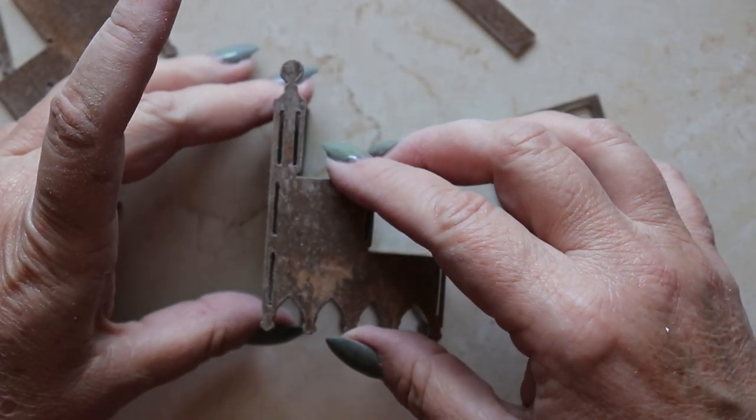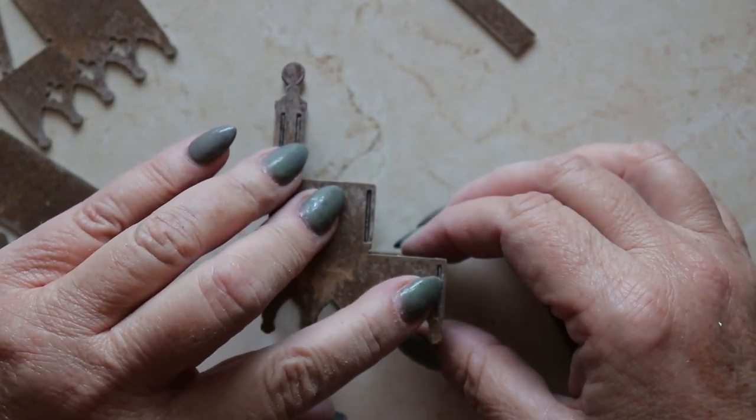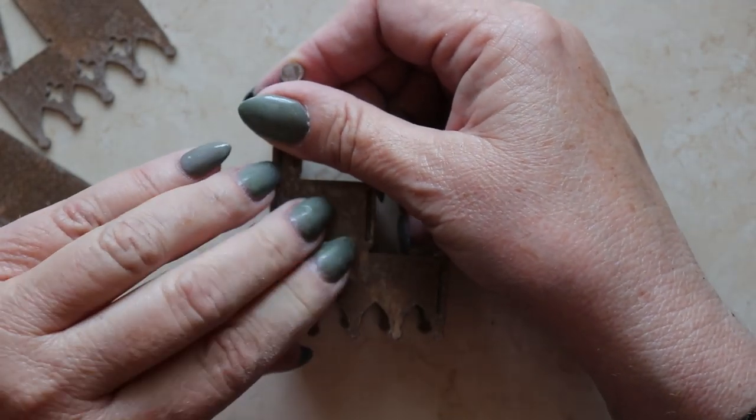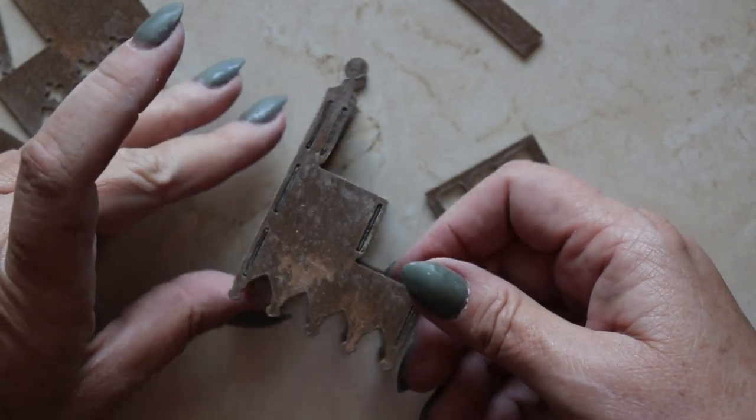Now we join it all together. This is the most finicky part of the construction process because you're lining up all of these individual tabs with the slots.